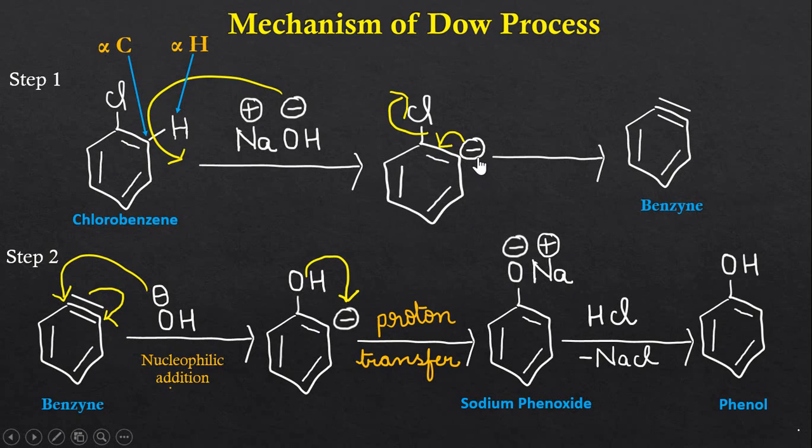The base removes the alpha hydrogen atom and we get a carbanion intermediate. The negative charge lies in the sp2 hybridized orbital of this carbon atom, and these electrons will be shared between the two carbon atoms. Chlorine departs and we get benzyne intermediate.